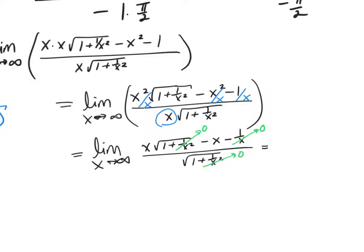What I end up with is infinity minus infinity — but now numerically, not as an indeterminate form. Any large number minus itself is zero, divided by 1, which is zero. So the final answer is zero.